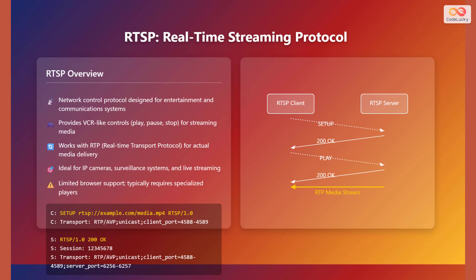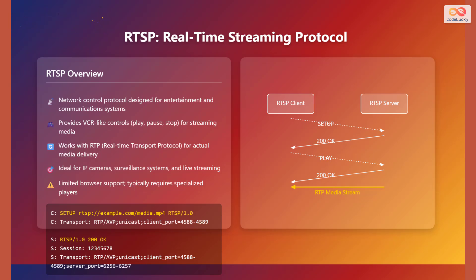On the right, you can see a basic diagram illustrating the setup and play sequence between an RTSP client and server. A client sends a setup request, receives an OK response, then sends a play request, and finally receives the real-time protocol media stream. Here is an example of a setup request and response using RTSP 1.0. The client sends a setup message to the server indicating the media and transport parameters, and the server responds with a session identifier and confirms the transport settings.